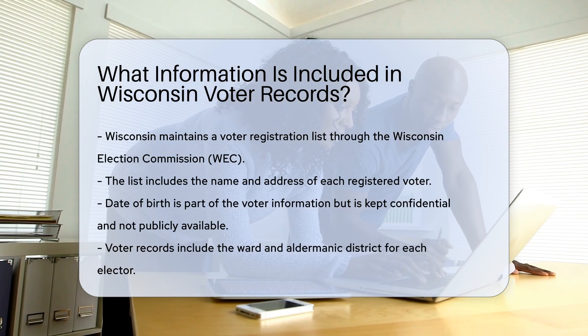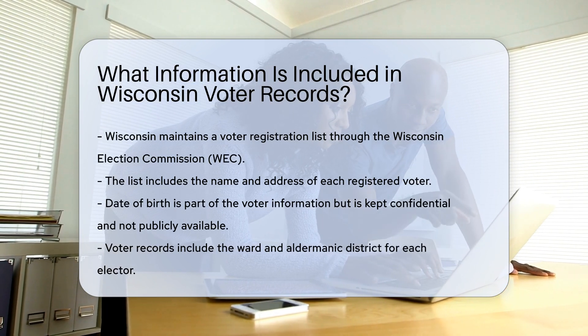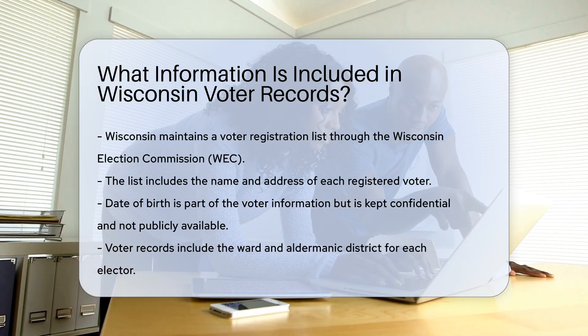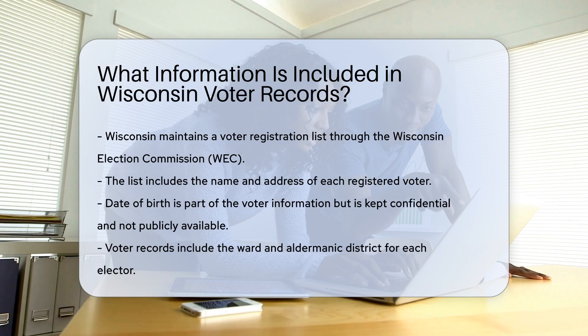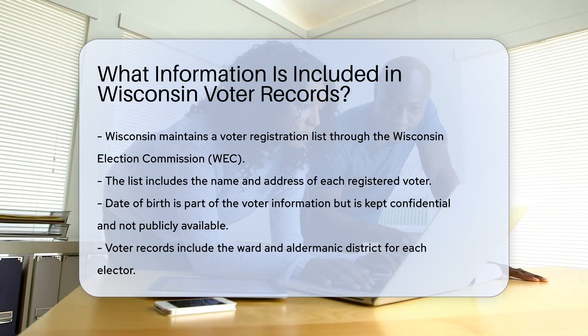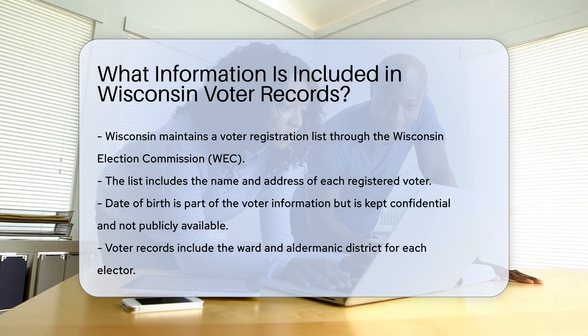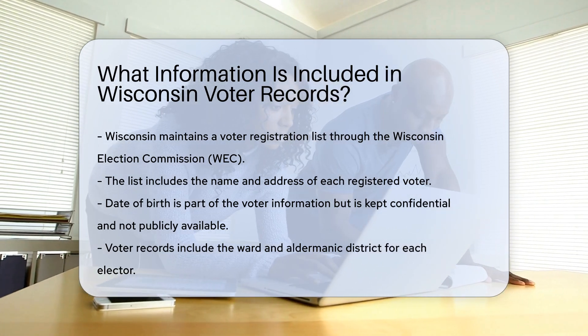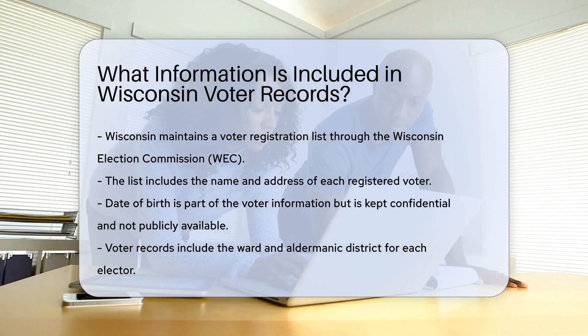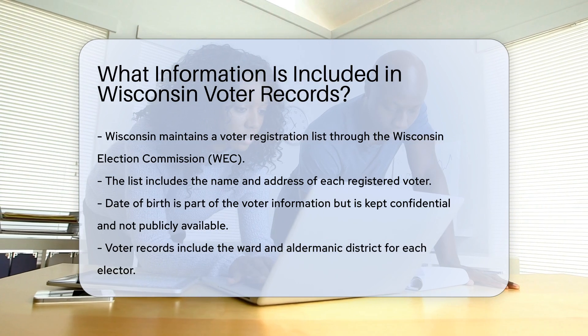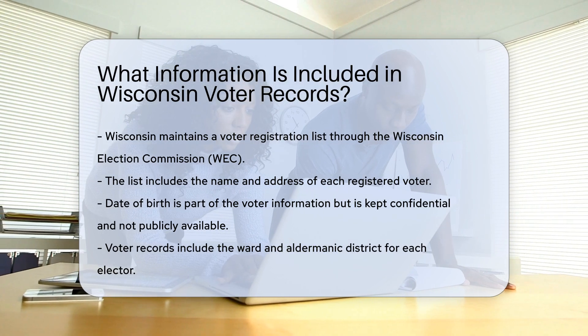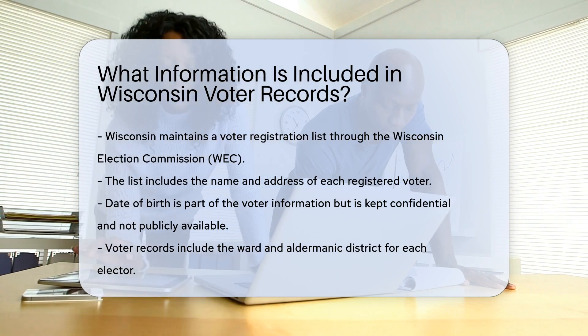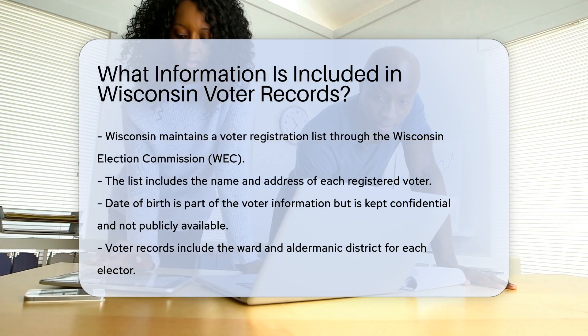Name and address: each registered voter's name and address are included in the list. Date of birth: although the date of birth is part of the voter's information, it is kept confidential and not made publicly available.